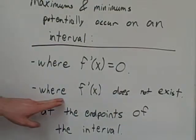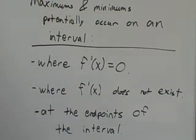But the most common place where the derivative does not exist is anywhere where the denominator is equal to zero. And maximums and minimums can occur on an interval actually at the endpoints of the interval itself.